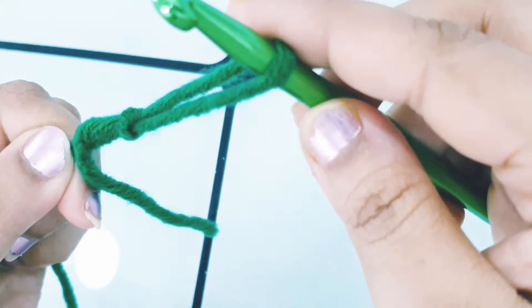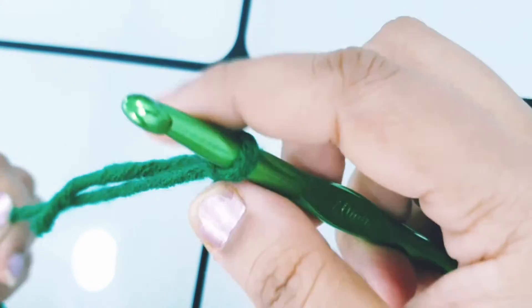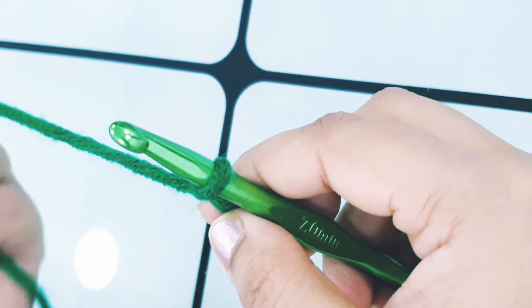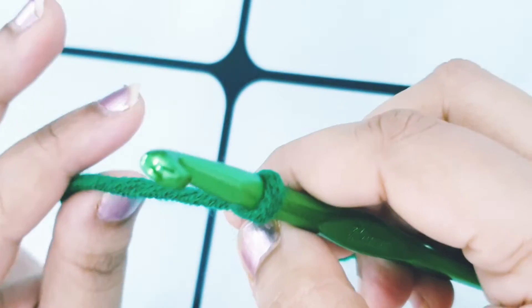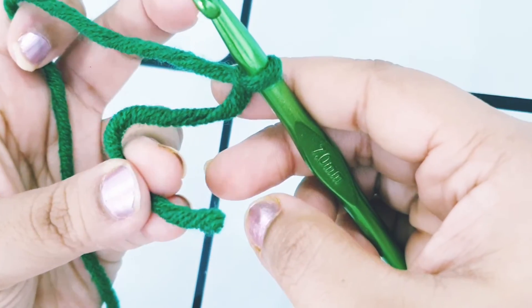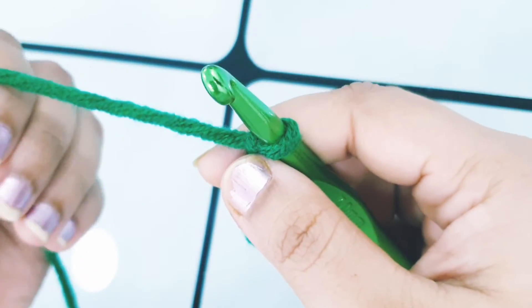And here you have your slip knot. Now let's see how to make the chains. To make the chain, hold your yarn, the longer part, not the end one. Grab the longer yarn.